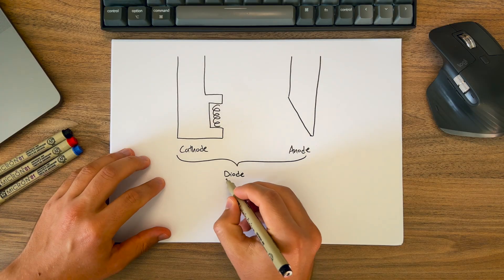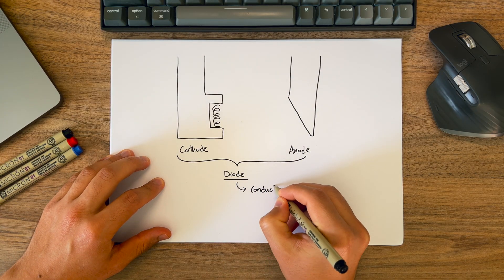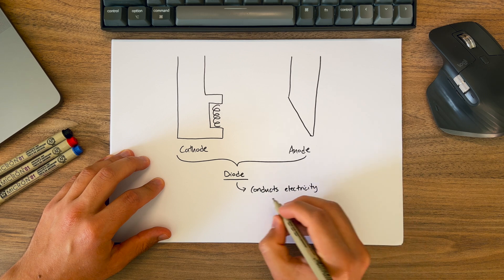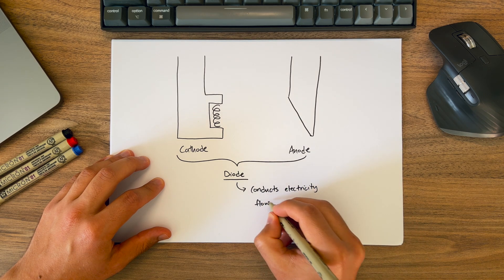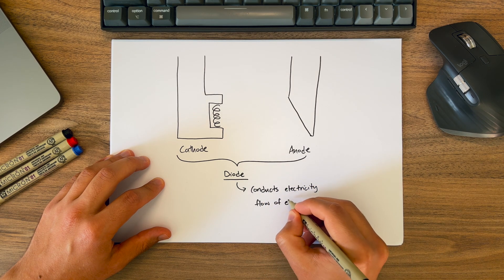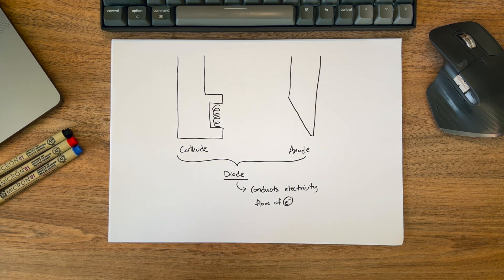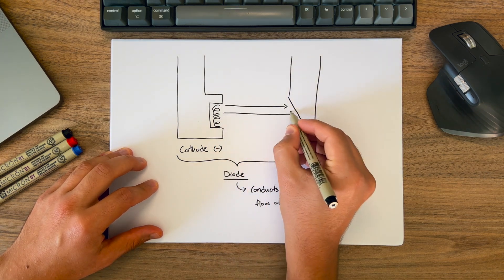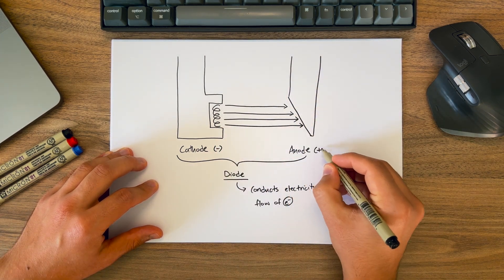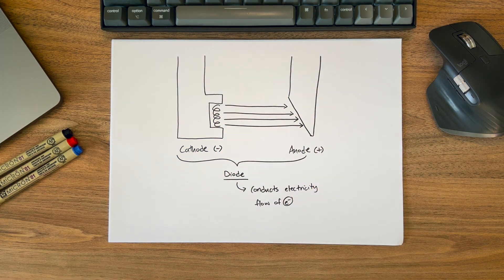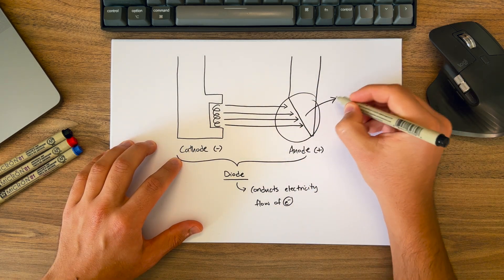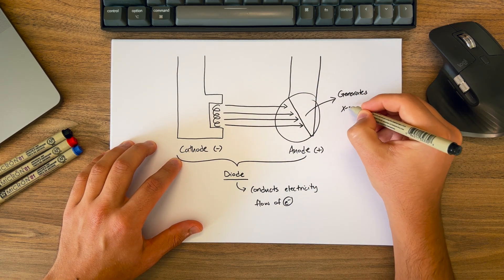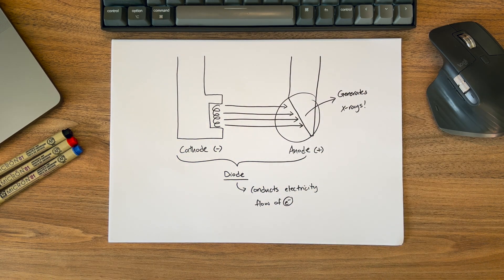The diode is just another name for a semiconductor device, which is basically a device that conducts electricity, allowing a flow of current — electrons — from one direction to another. So the cathode is the negative part and is what emits electrons that go towards the anode, the positive part. And this interaction of those electrons coming in from the cathode and hitting the anode is what generates x-rays.